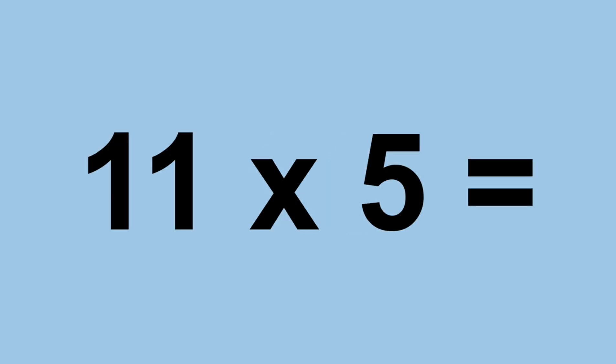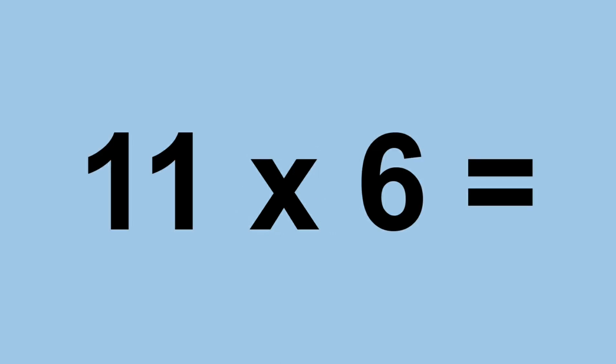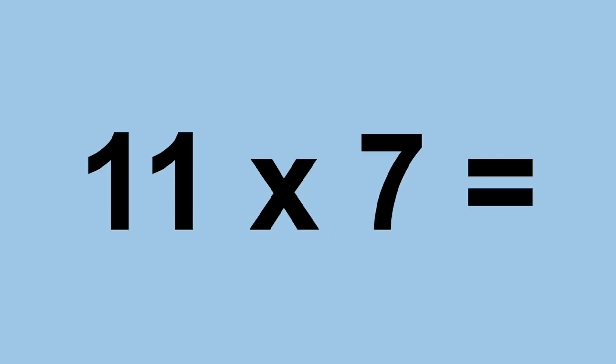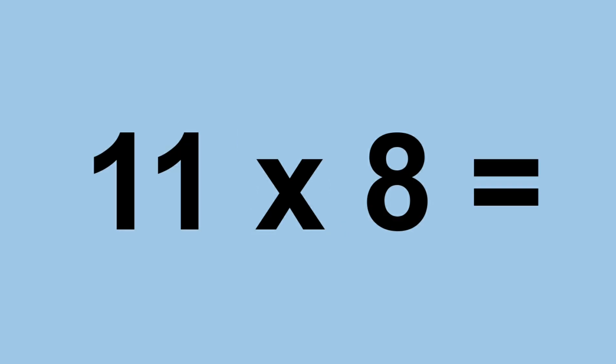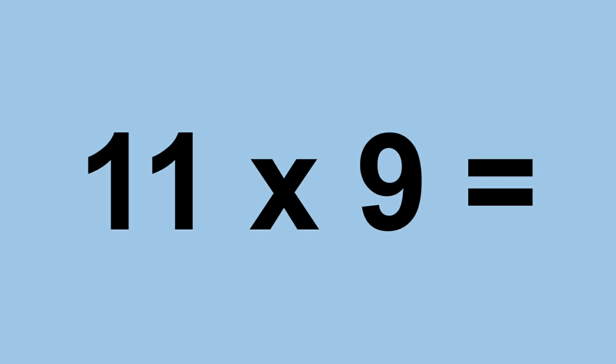Eleven times five equals fifty-five. Eleven times six equals sixty-six. Eleven times seven equals seventy-seven. Eleven times eight equals eighty-eight. Eleven times nine equals ninety-nine.